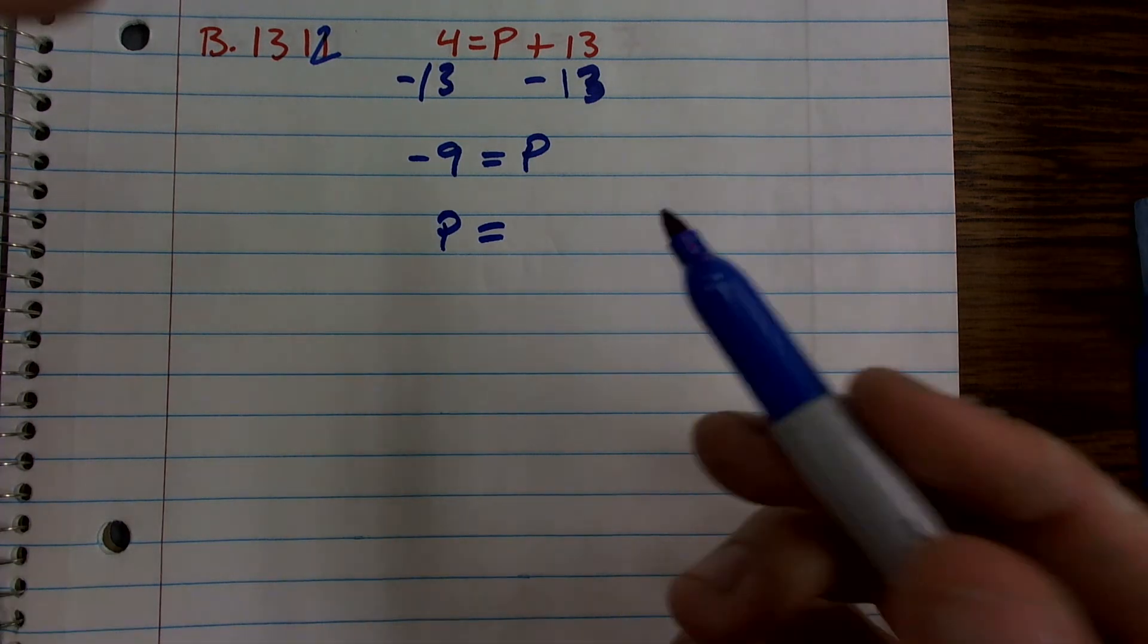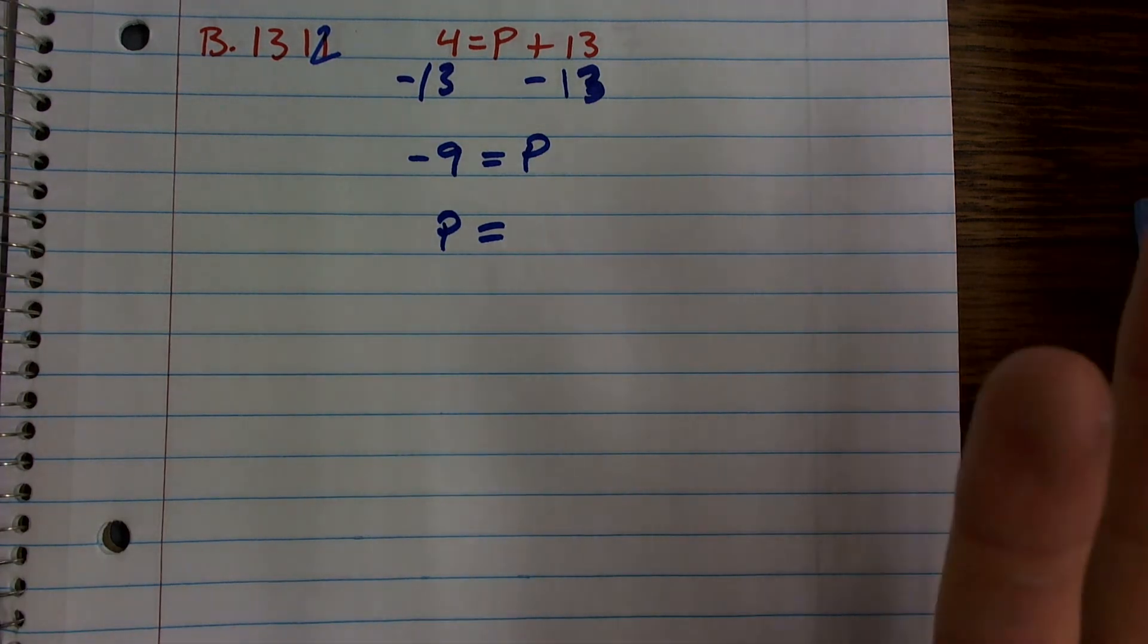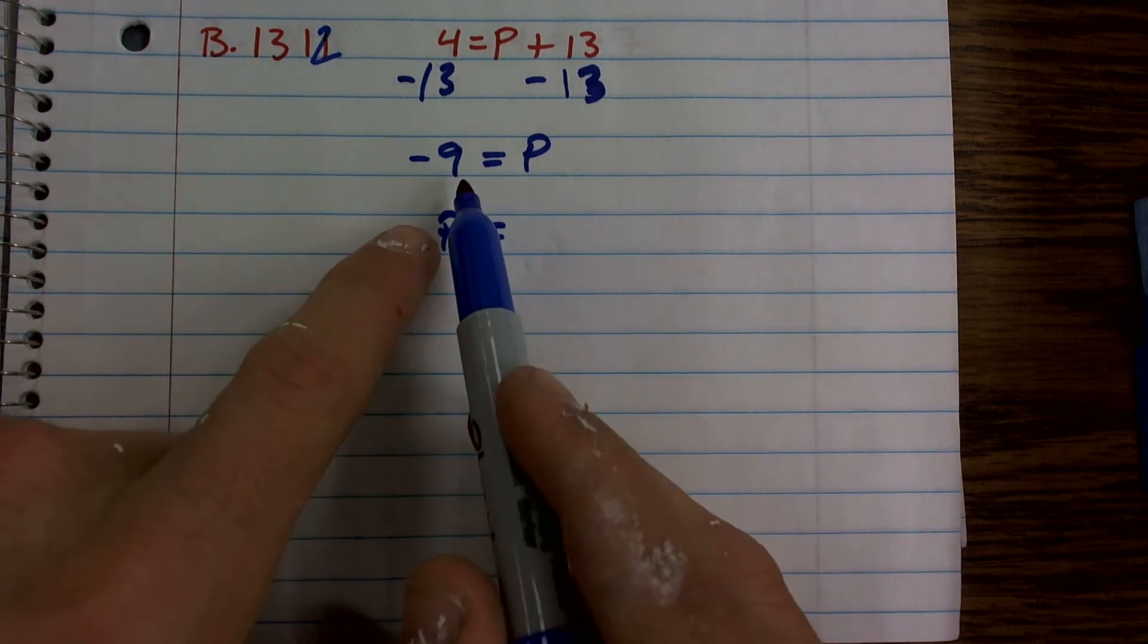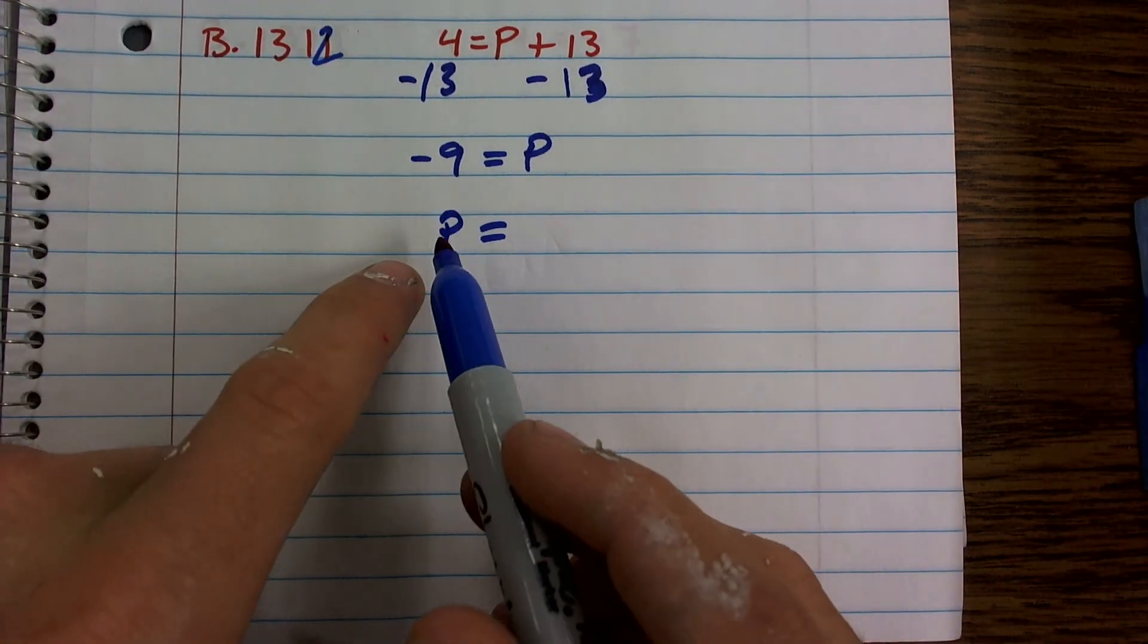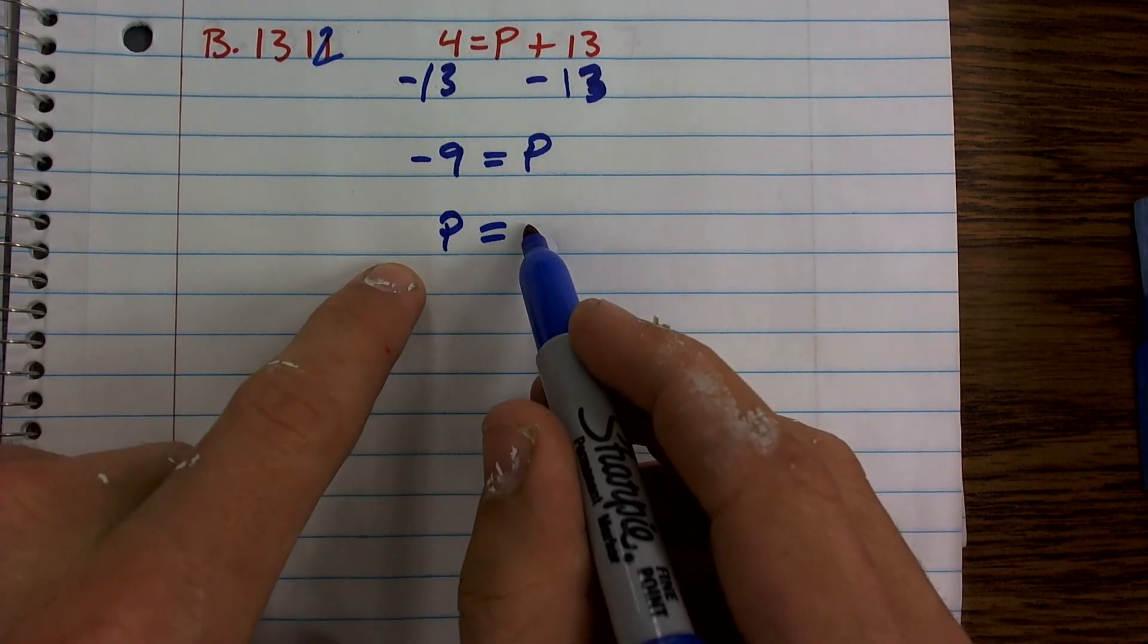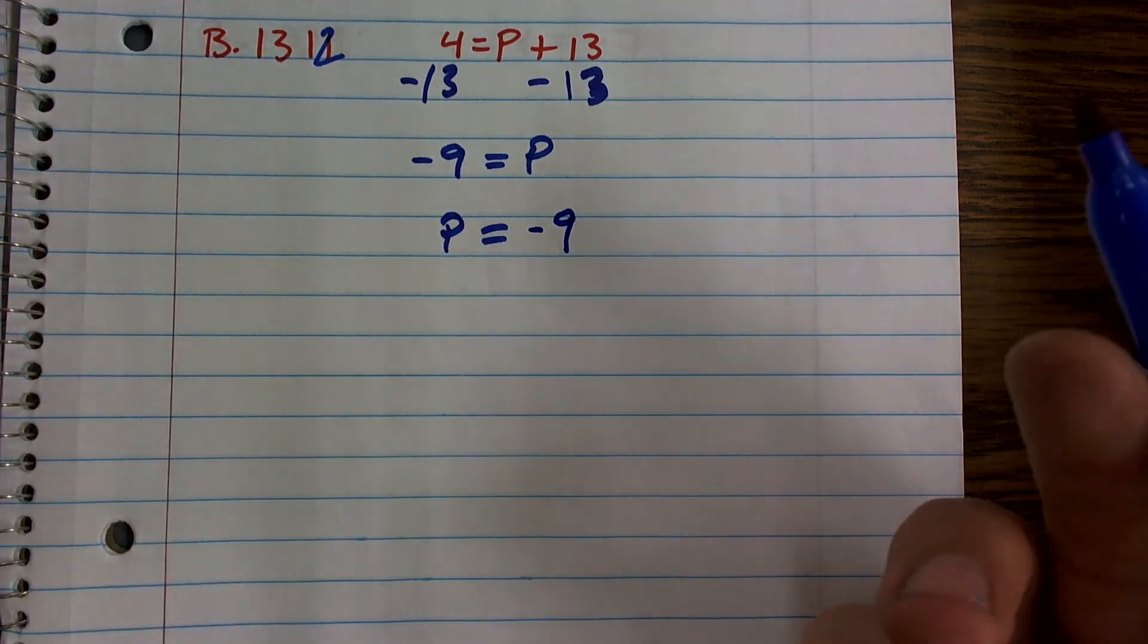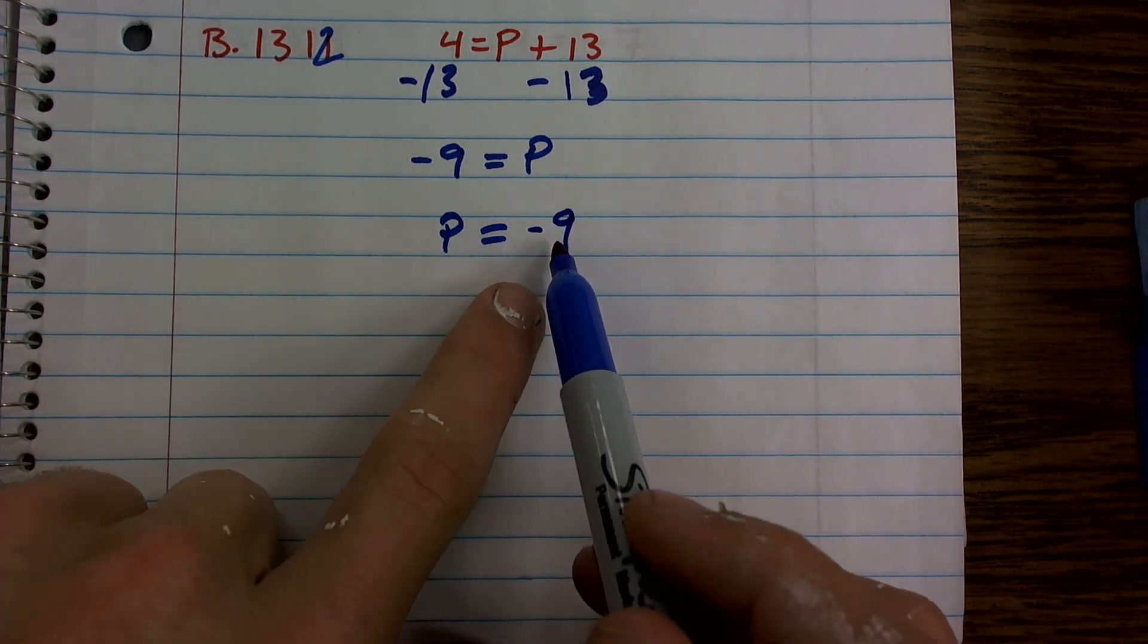We always read from left to right. So you don't say negative 9 equals p, but you say p, which is your unknown, equals negative 9. So the value of my variable equals negative 9.